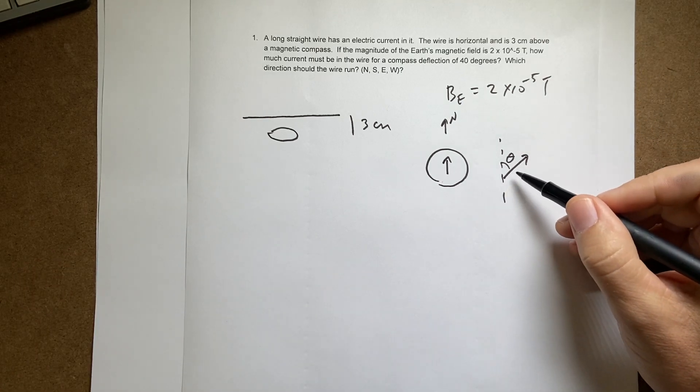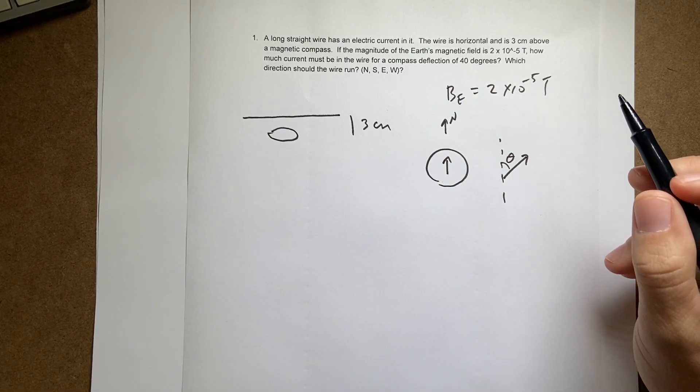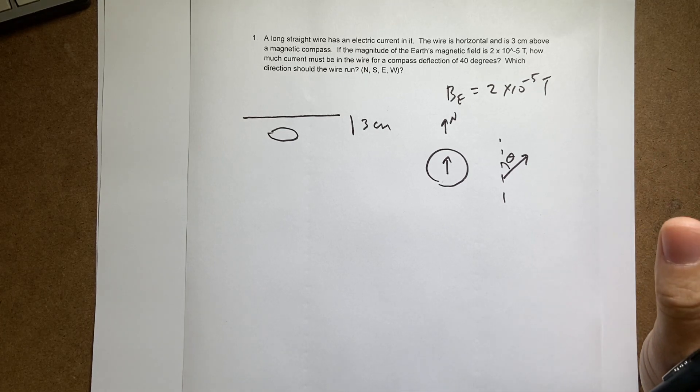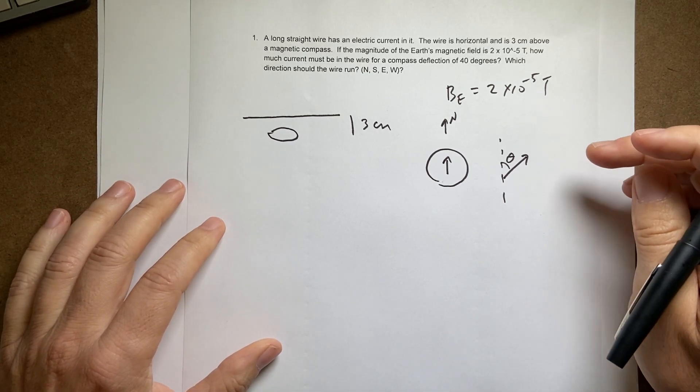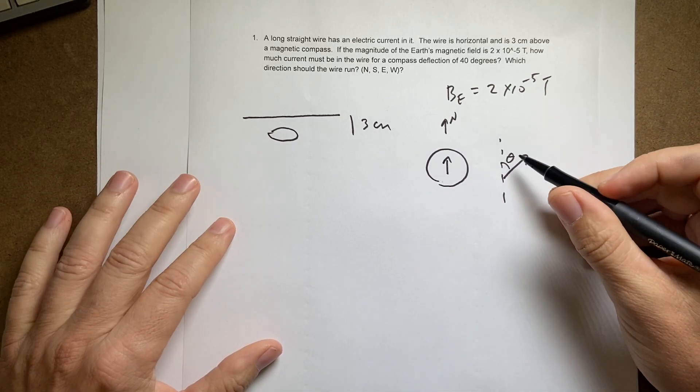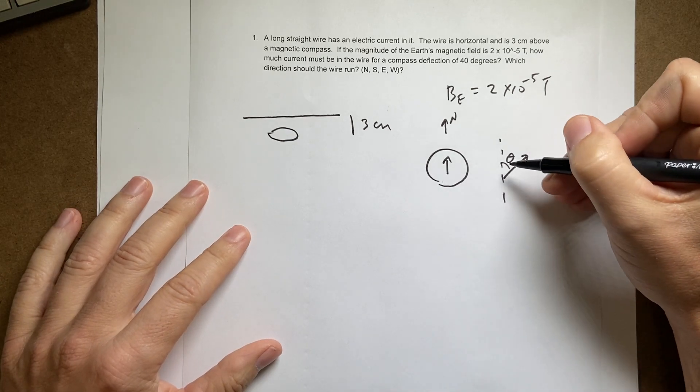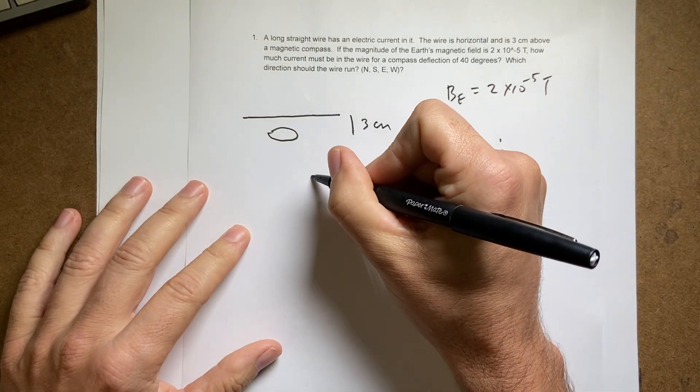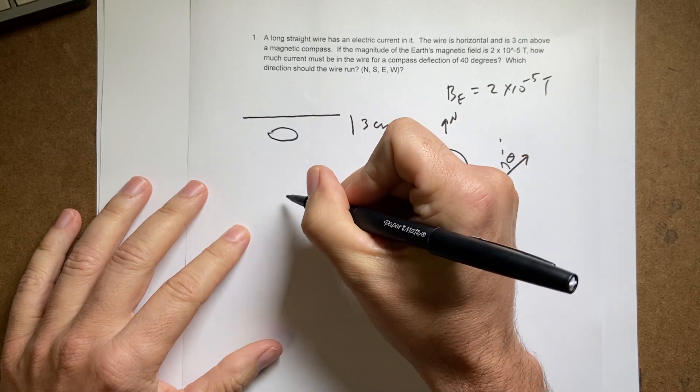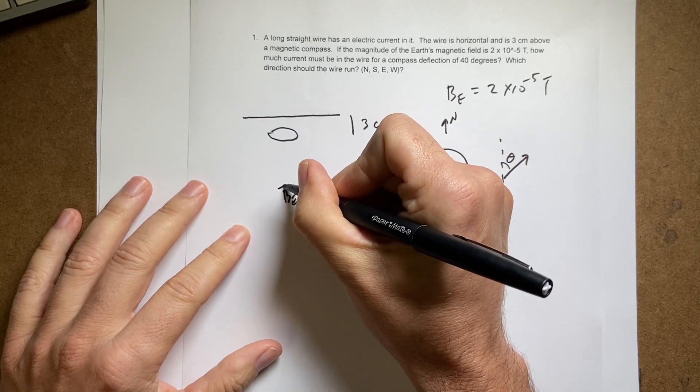Well, I know that the magnetic field obeys the superposition principle. So that means I have two magnetic fields here. I have the magnetic field due to the Earth. I'll put it right here. I know this. B Earth in the north direction.